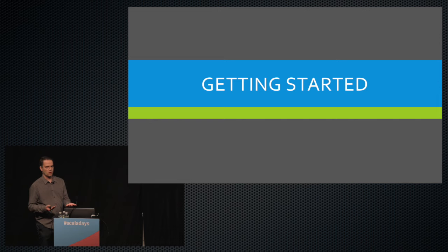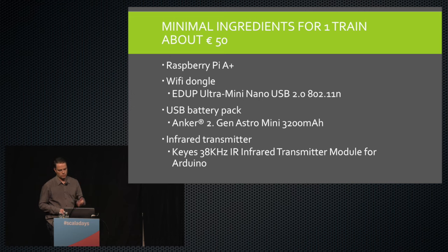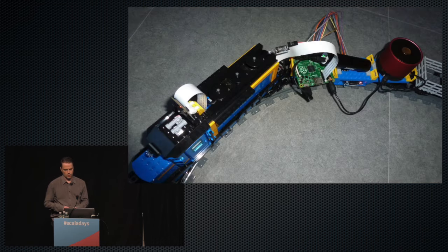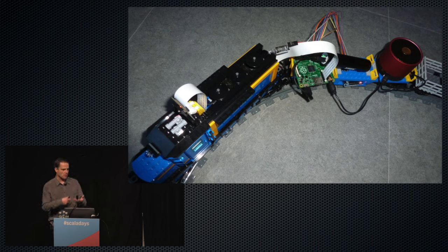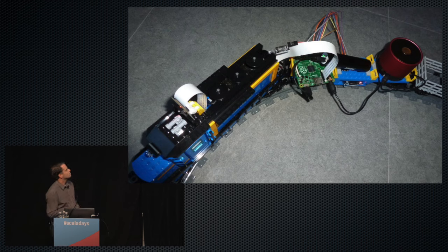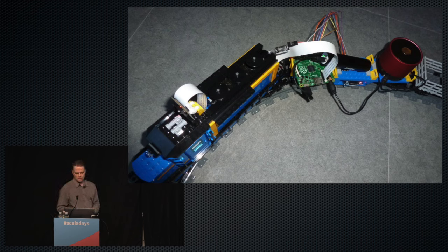The nice thing is it doesn't have to be expensive to get started. Most of you already have a Raspberry Pi, so you only have to spend like 25 bucks to get a WiFi dongle, a battery pack, and an infrared transmitter. You can go further and keep adding stuff. This one on the right has a speaker because you need train sounds of course. It has a camera so I have a live feed of the train running on the track — when I'm at work, on my mobile phone I can see where the train is. And underneath there's an RFID reader so I can determine the position on the track.